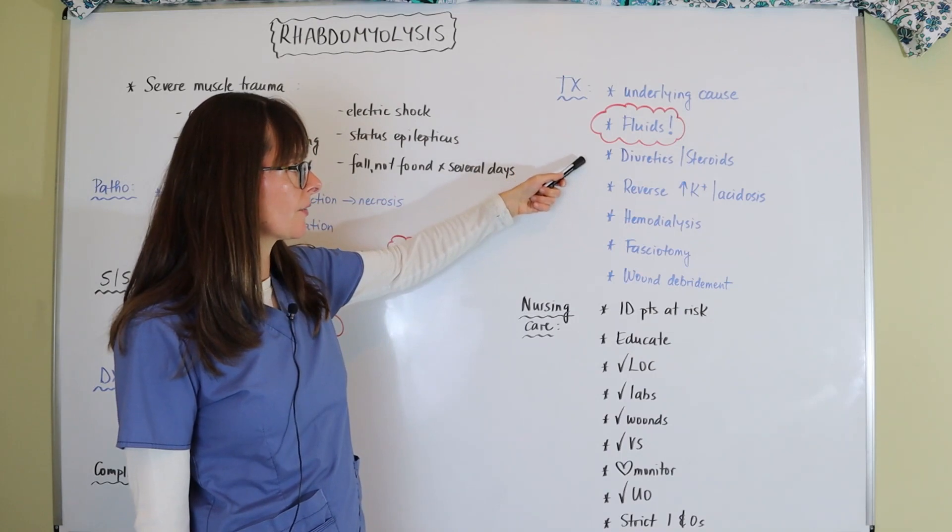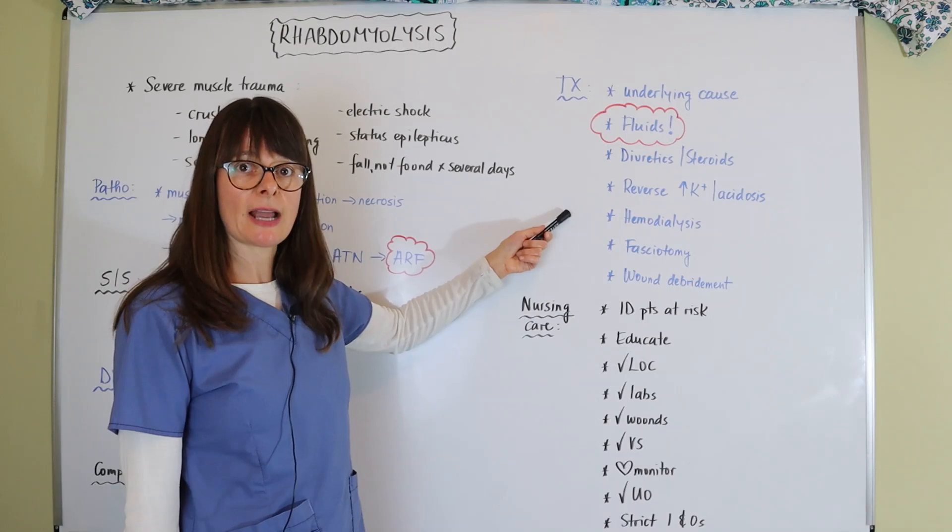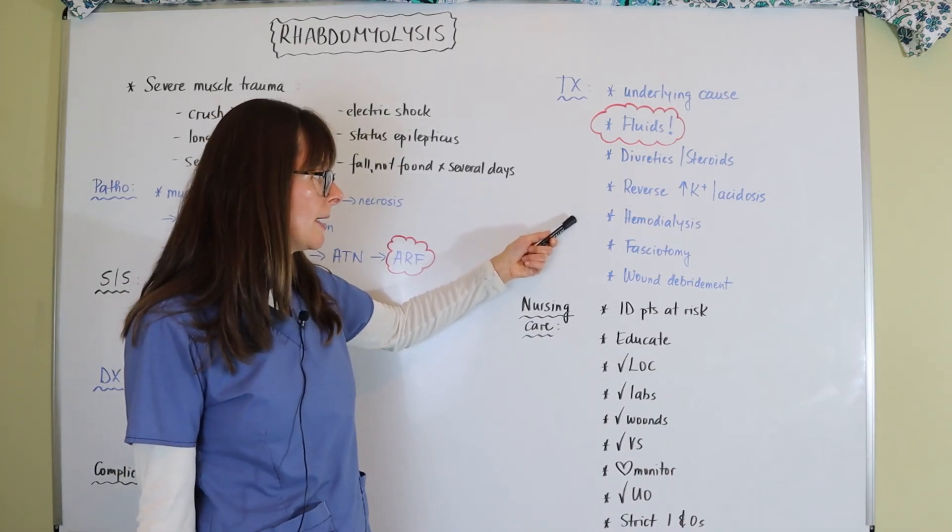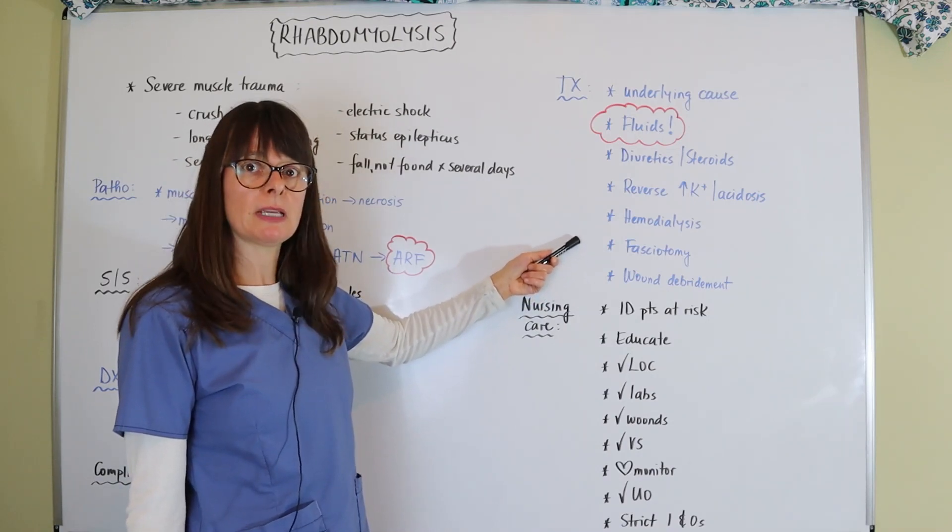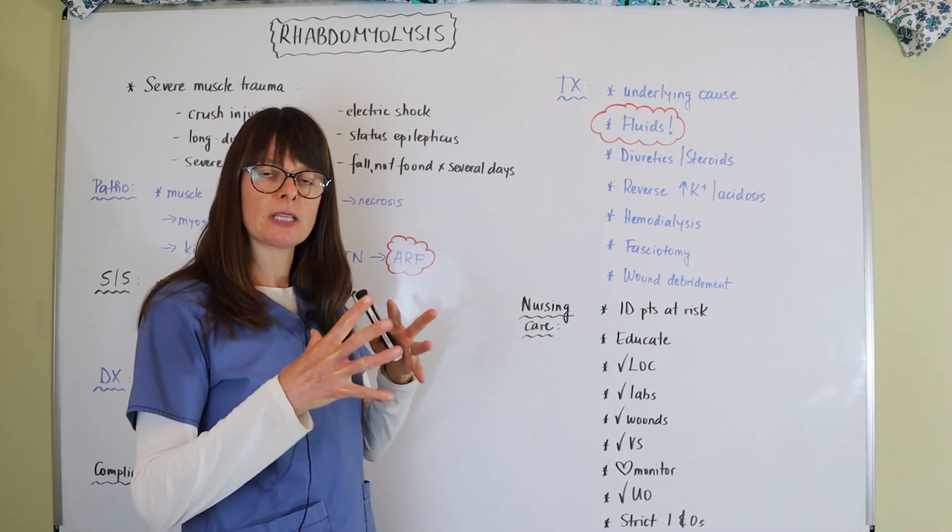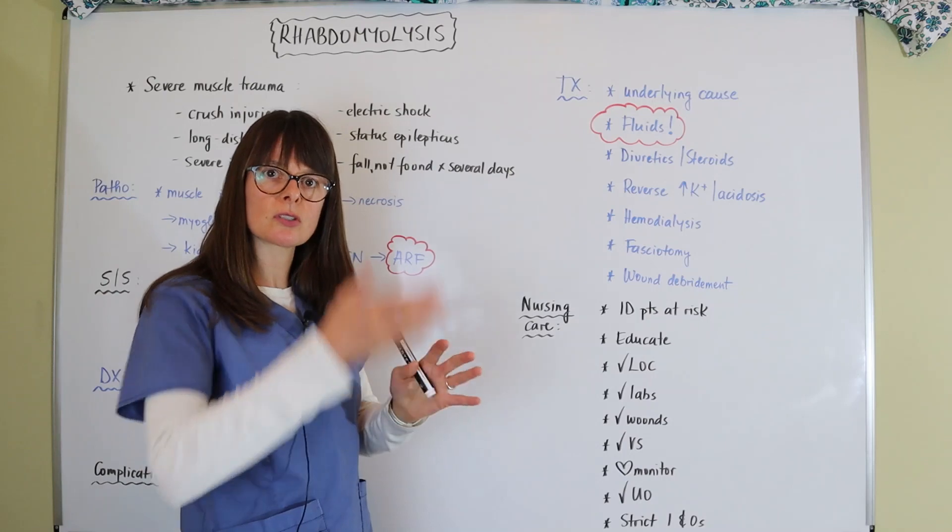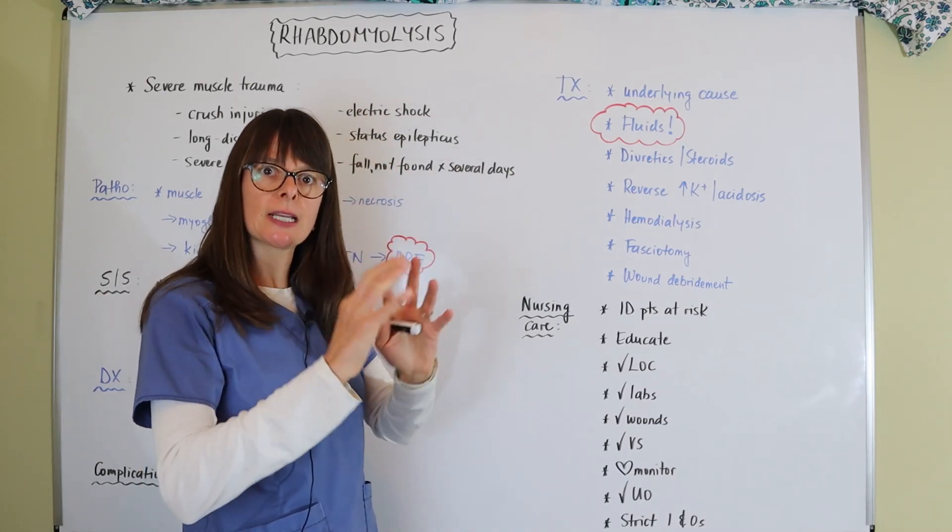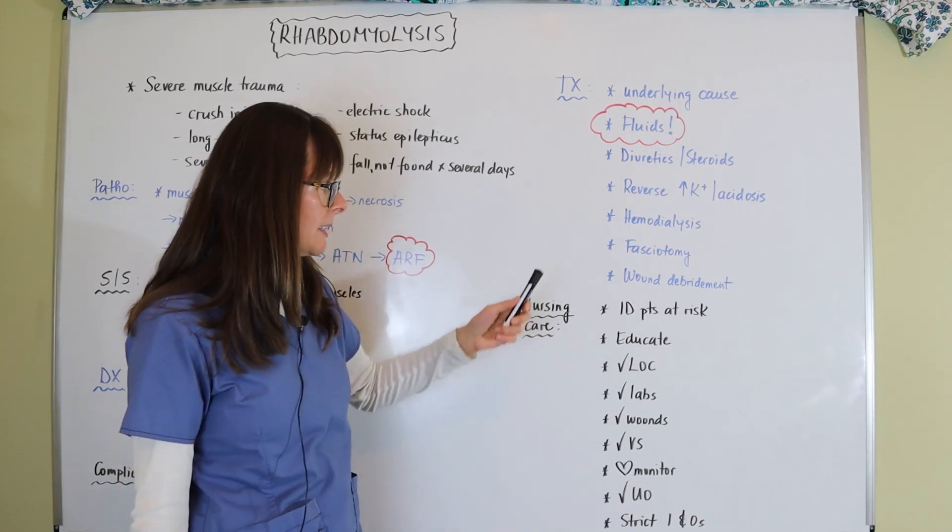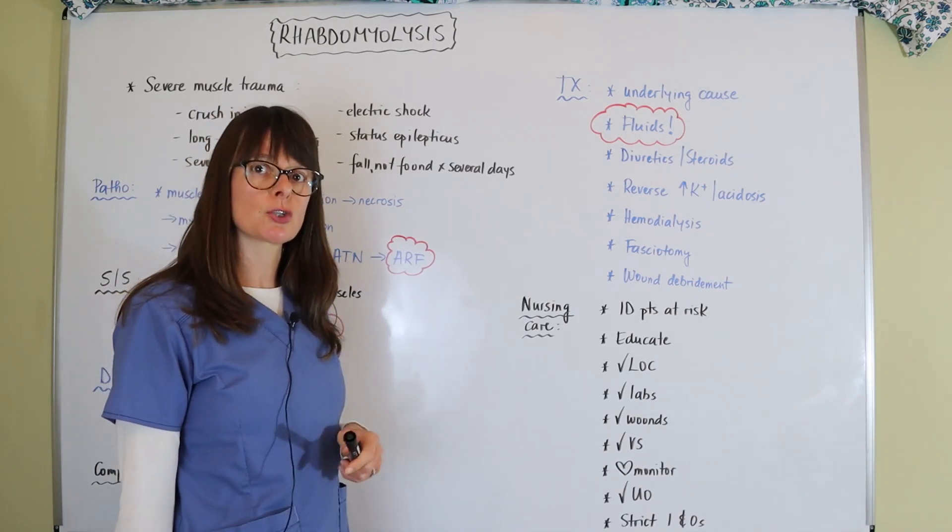If fluids and diuretics and steroids are not enough, the patient might have to go on temporary hemodialysis until the kidneys can recover from this insult. The patient might need a fasciotomy if there is so much hematoma or bleeding inside the muscle, inside that fascia, that it compresses and causes necrosis. We can open up that muscle fascia and give it some more room so that swelling can expand. And then certainly wound debridement would help in getting that muscle tissue back to health.